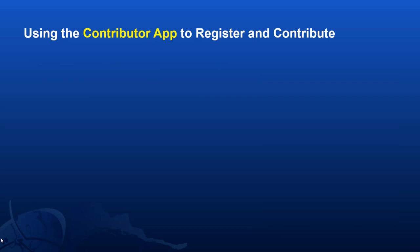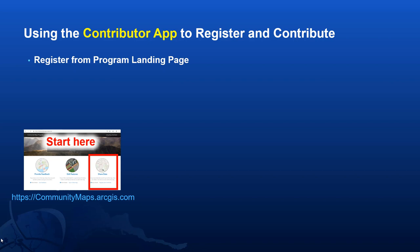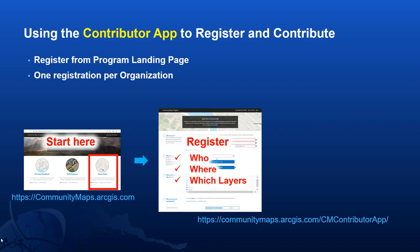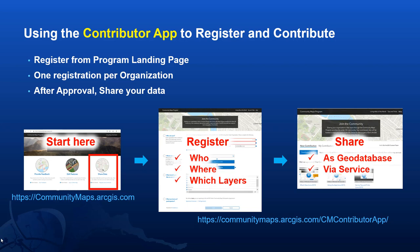Now let's talk about using the Contributor app to actually register and contribute. You register from the program landing page, which just means letting us know who you are, where in the world you are, and which layers you'd like to register for. After you register, the Community Maps team reviews and approves your registration. Once you're approved, you can share your data in the form of a geodatabase or through a service.